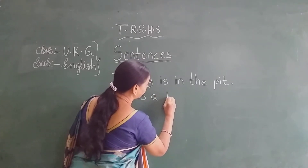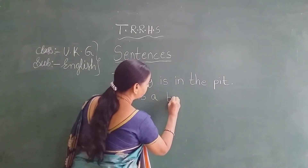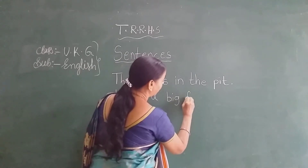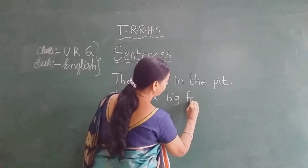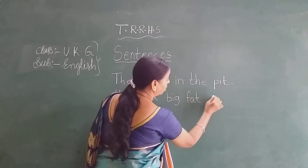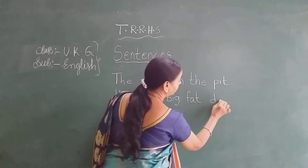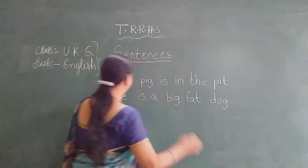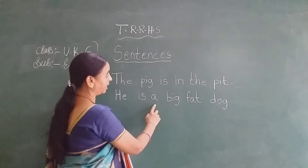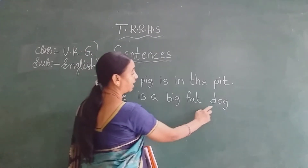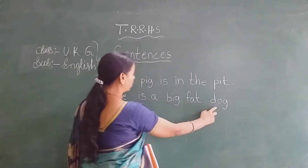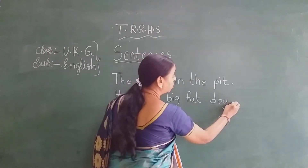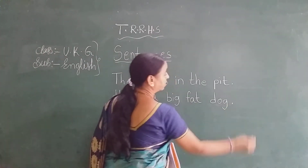Big. B-I-G. Big. Fat. F-A-T. Fat. Dog. D-O-G. Dog. He is a big fat dog. This sentence is completed. So we have to put a full stop here.